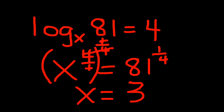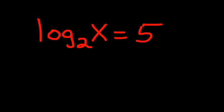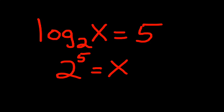The third and final type is log base 2 of x equals 5, where x is in the argument — it's the answer we'll get from the exponential equation. Rewriting it: 2 is the base, 5 is the exponent, equals x. This is the easiest to solve; we simply find 2 to the fifth power: 2 times 2 is 4, times 2 is 8, times 2 is 16, times 2 is 32. Therefore x equals 32.